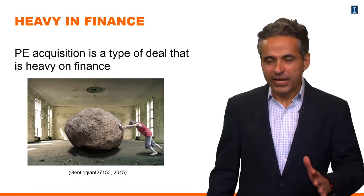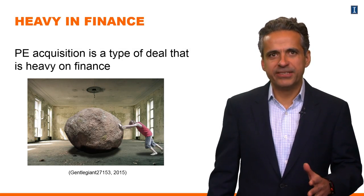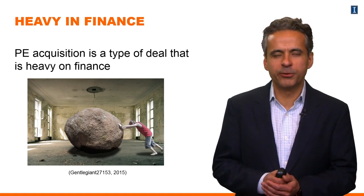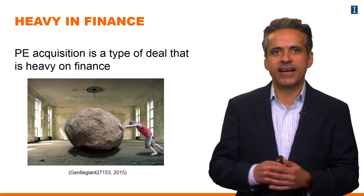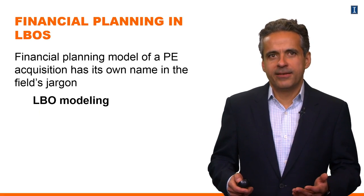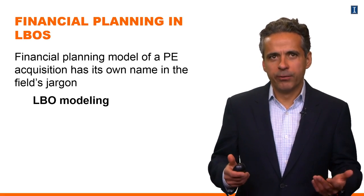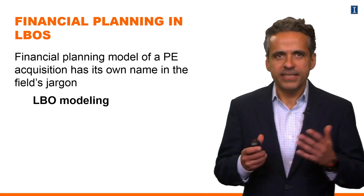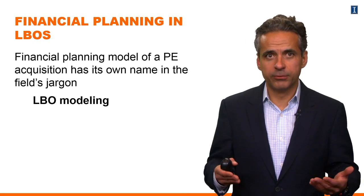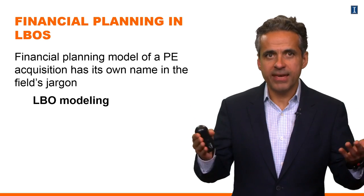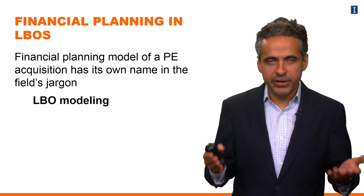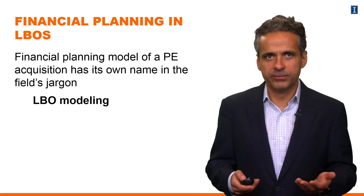As the previous example already shows, a private equity acquisition is a type of deal that is very heavy on finance. It's a situation where financial modeling and financial policy are extremely important. There is in fact a financial model that is very specific to private equity deals, which we call the LBO model — the leveraged buyout model. It has its own name in finance jargon because it's a very common model that private equity firms use.